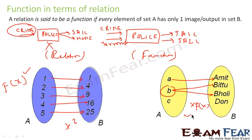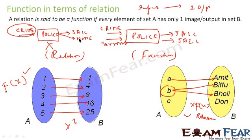This is a relation but not a function. In a function, for a given input there is only one output — one input cannot have multiple outputs. For example, if police is a function, it must send the criminal to either jail or home — it can't do both. For input B we have two outputs (Bittoo and Bolli), so this is not a function.